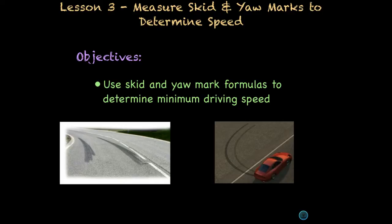So, taking skid and yaw marks, the measurements, into consideration as well as from the scene, reconstructionists can determine the speed of the car when entering the skid. These formulas are often presented in court and are recognized for their strength in modeling real-world automobile accidents.